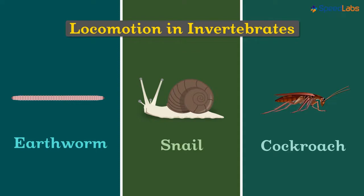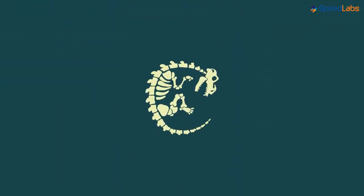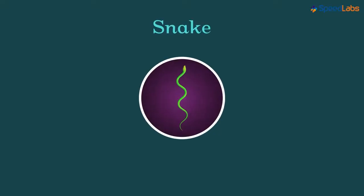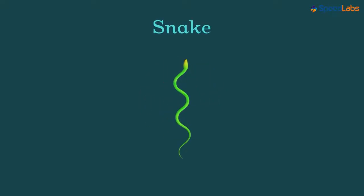Now it's time for us to move ahead and learn the movement and locomotion in higher animals, animals which have a well-defined bony skeleton. Let's begin with a simple animal like a snake. So does a snake have a bony skeleton inside its body? Yes it does.